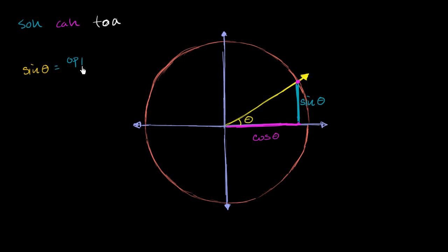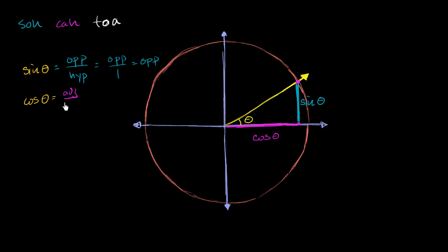Sine of theta is equal to the opposite side over the hypotenuse. Since this is a unit circle, sine of theta is equal to the length of the opposite side. And by the same exact logic, the cosine of theta is equal to adjacent over hypotenuse. Since the hypotenuse is equal to one, that's just the length of the adjacent side. So this is all a review showing how the unit circle definition is an extension of the SOHCAHTOA definition.